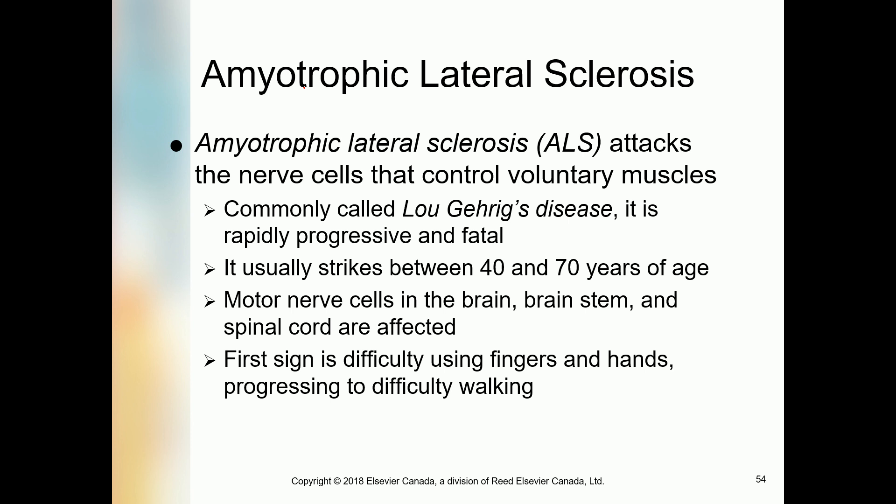Another type is amyotrophic lateral sclerosis, abbreviated ALS. ALS attacks the nerve cells that control voluntary muscles — the muscles we consciously control and move. It is commonly called Lou Gehrig's disease and is rapidly progressive and fatal.